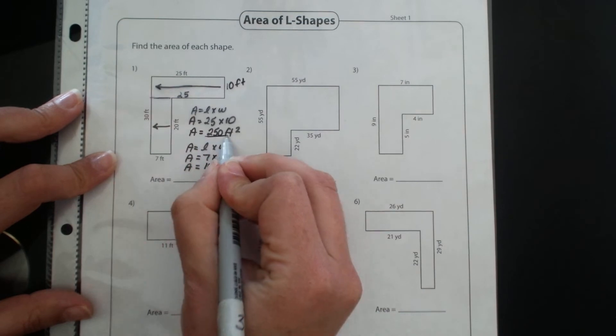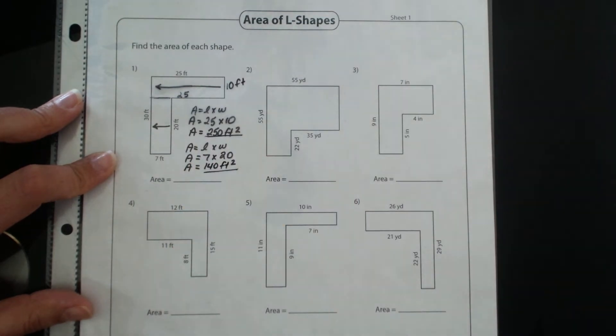So I've got my two rectangles now, but I'm not quite done. Because with L shapes, if you do decompose the shape into two shapes, we have to add up the areas in order to find the total.